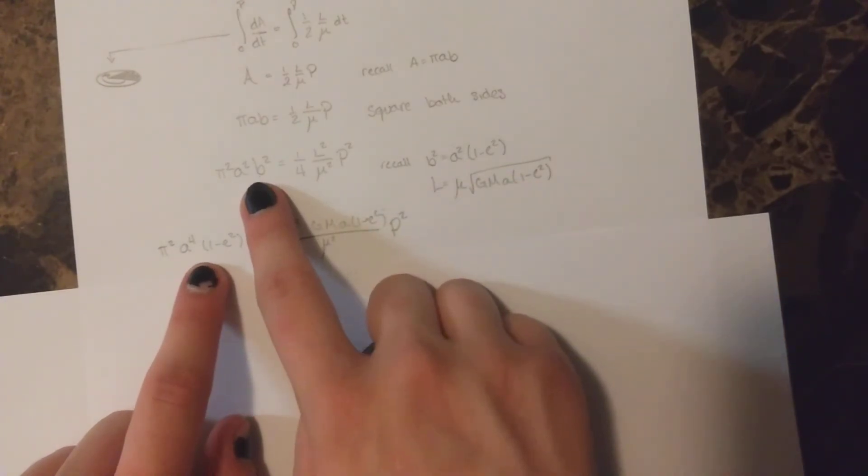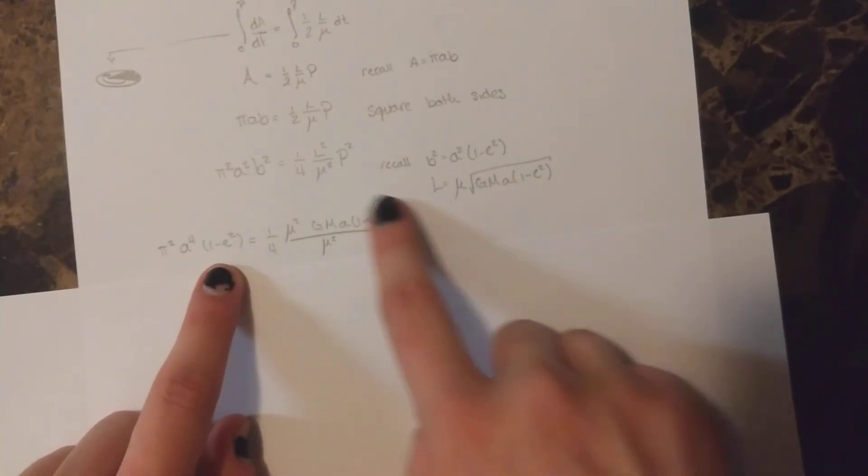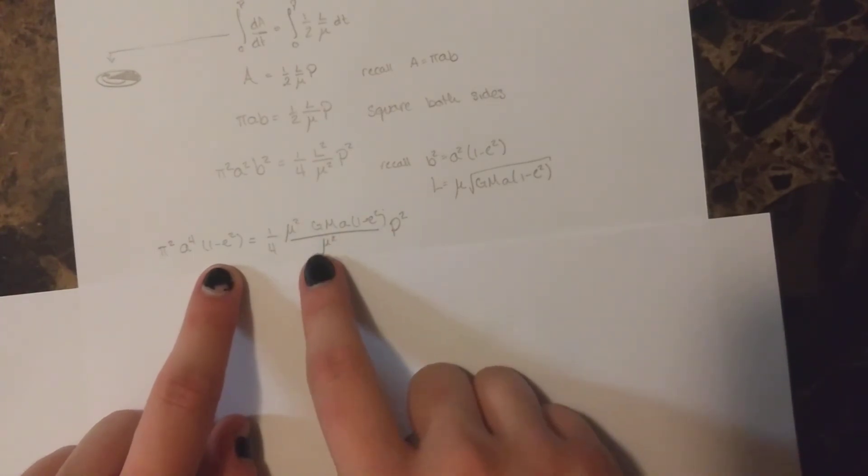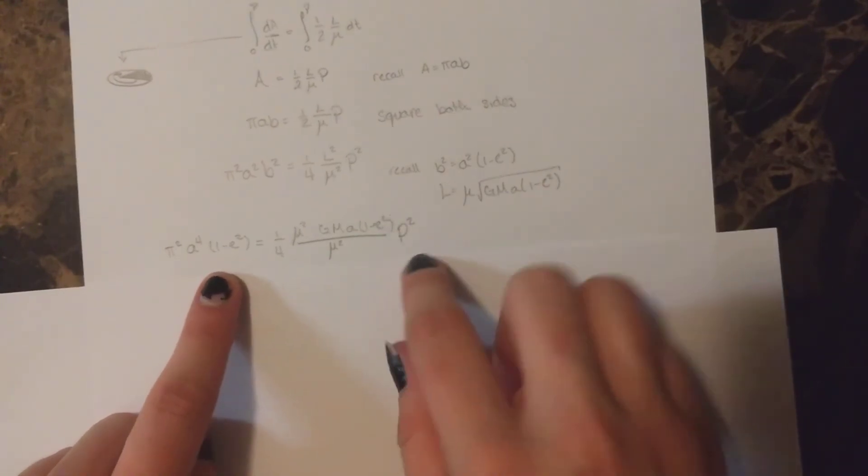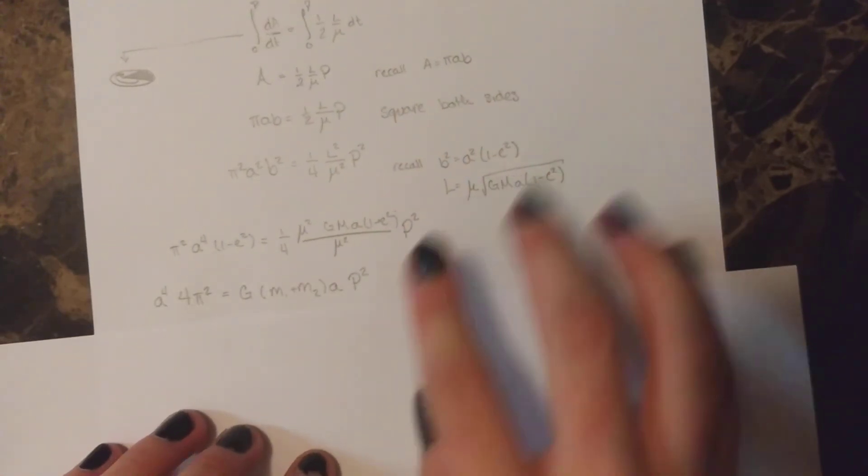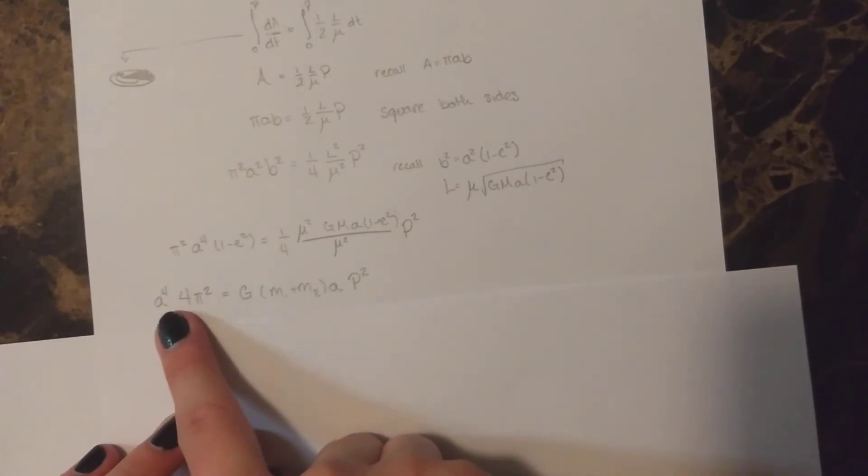l squared, I simply squared this value and put it here. And now what we can see is that the reduced masses on this right-hand side will cancel out. And each side has a 1 minus e squared, so those will cancel out. And if we multiply 4 over to the left-hand side, then this is what we're left with.